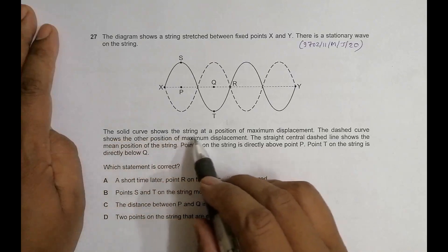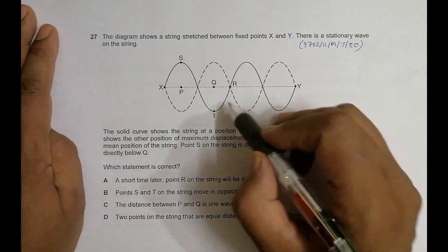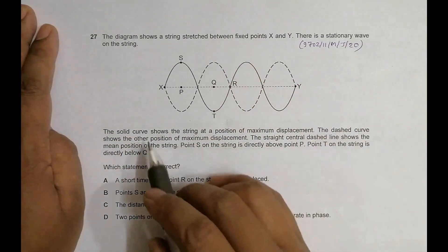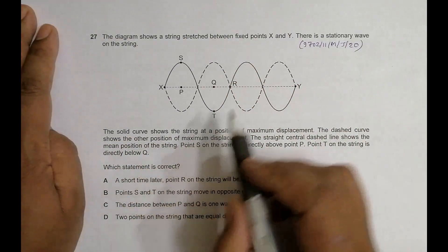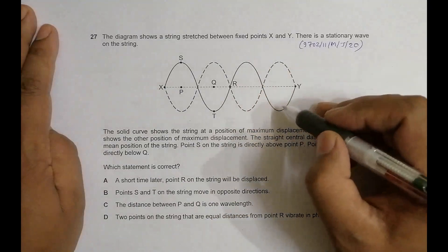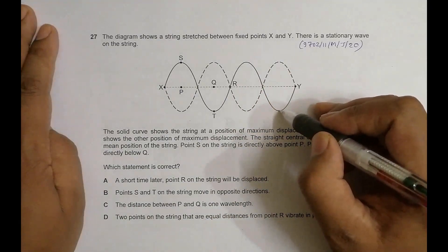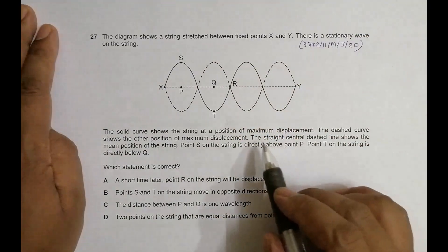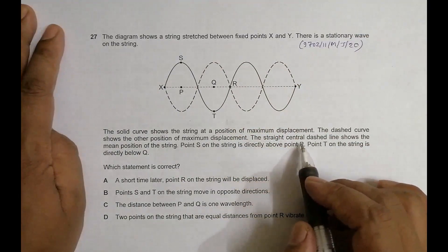The solid curve shows the string at a position of maximum displacement. The dashed curve shows the other position of maximum displacement, so it is the reversal - at the lowest point versus the highest point, highest point, lowest point, and so on.